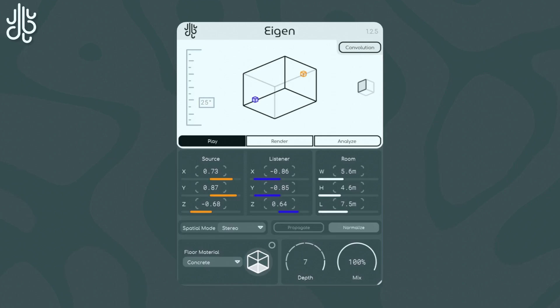You control the depth of the early reflections by changing this selector here, beside the mix knob. The selector goes up to 7 reflections deep, and down to just a single direct delay from the source to the listener.